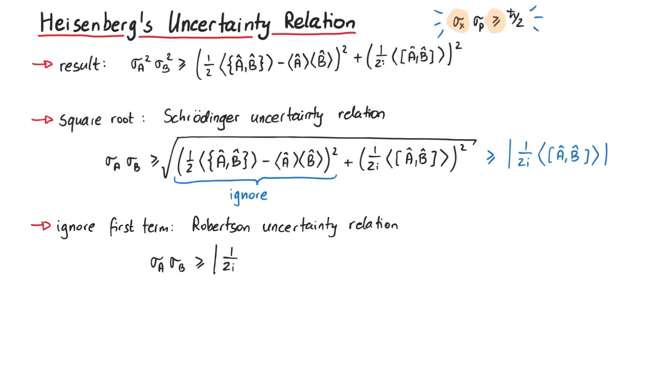You might wonder why we keep the imaginary unit in this expression. We could, of course, remove it since we are taking the absolute value of this term. However, if A and B are Hermitian operators, their commutator will be anti-Hermitian, meaning it will contain a factor of i. Therefore, the 1 over i in front of the term will cancel anyway.